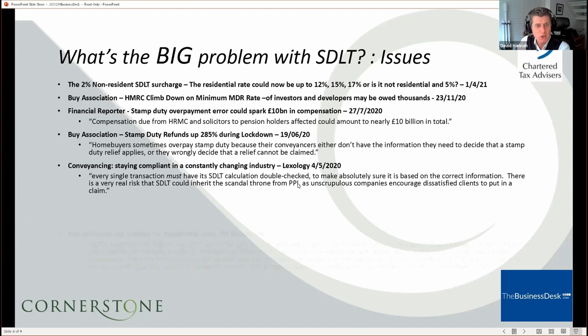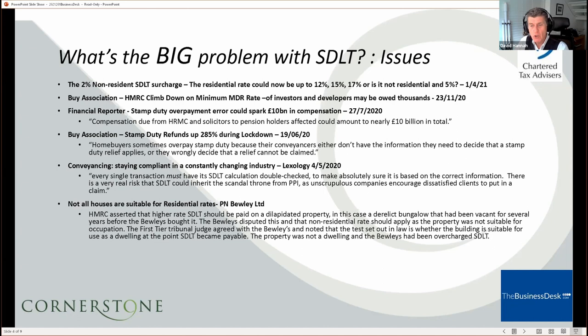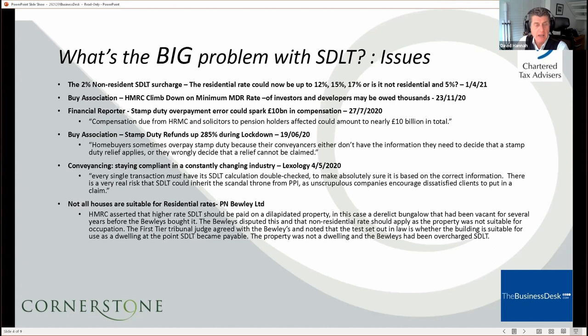We've had the ongoing issue of 17% maximum rate versus 5% maximum rate. If you buy a property that is uninhabitable, you don't pay the residential rate — you pay the non-residential rate. There's been one case on it so far: PM Bewley Limited. It generated a win for the taxpayer, and they'd also overpaid anyway, so the court handed them both a victory and a refund. HMRC's arguments were so weak that the judges said, 'At times we wondered exactly what HMRC's argument was — indeed at one point, we wondered whether they in fact had one.'